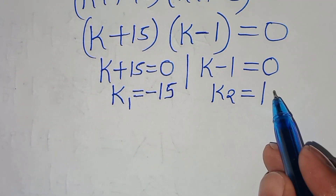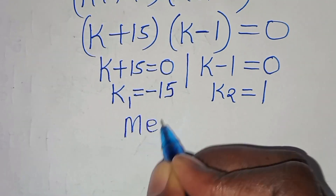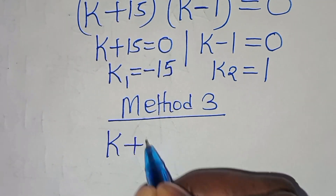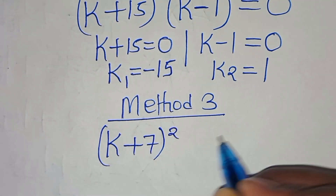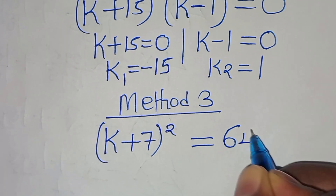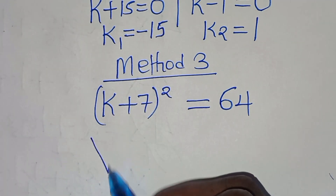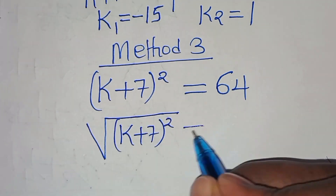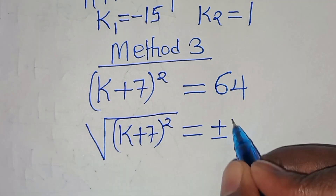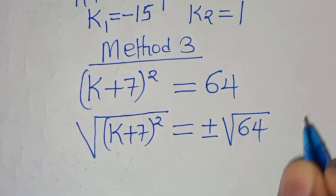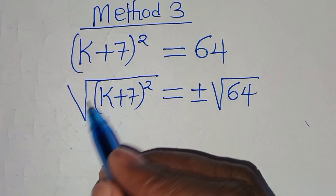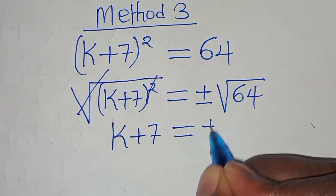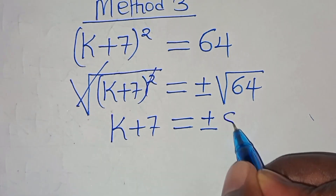Method 3: We have (k + 7)² = 64. Applying the square root on both sides, we get √((k + 7)²) = ±√64. Eliminating the square root on the left, we have k + 7 = ±8.